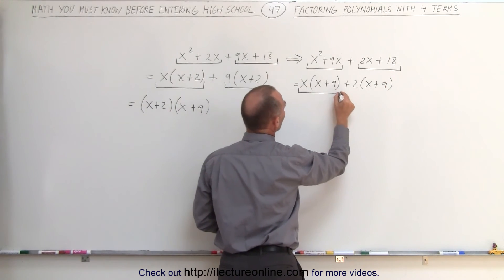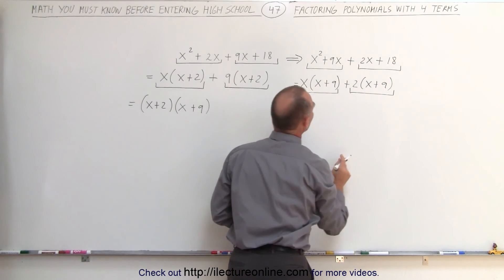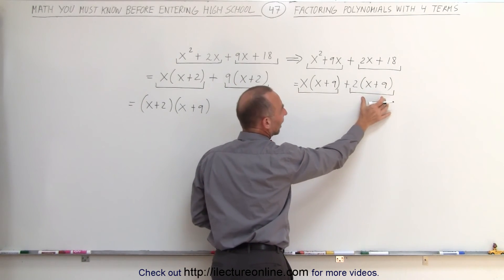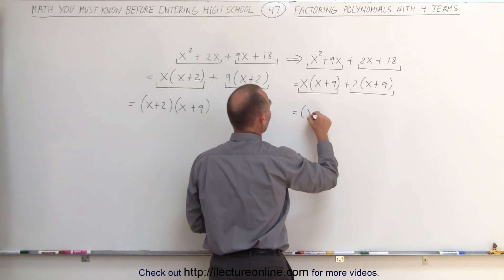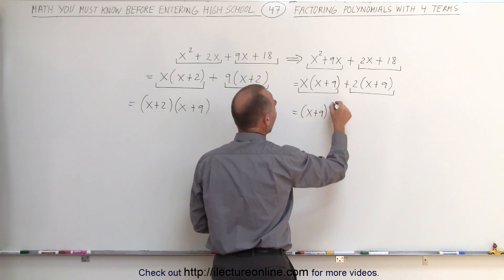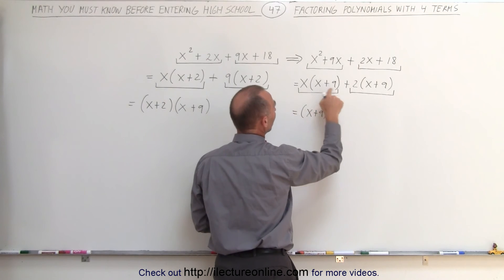Again we put brackets underneath here and notice we have an x plus 9 and an x plus 9. We can factor out an x plus 9 so this is equal to x plus 9 times what we have left which is an x plus 2.